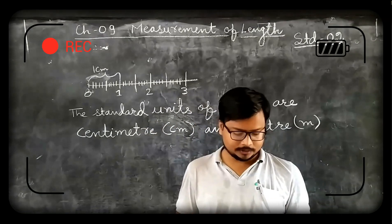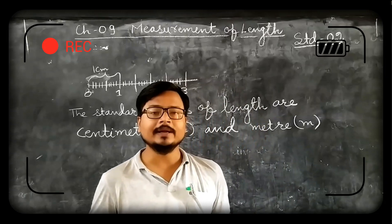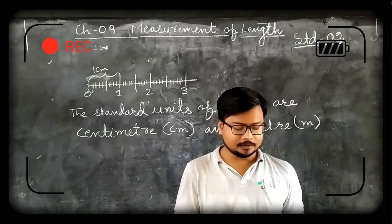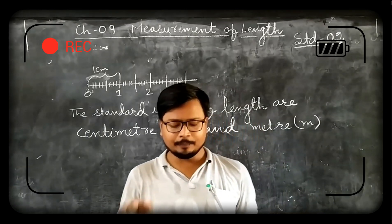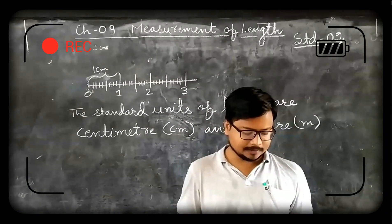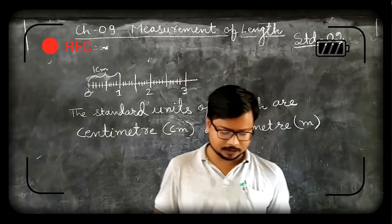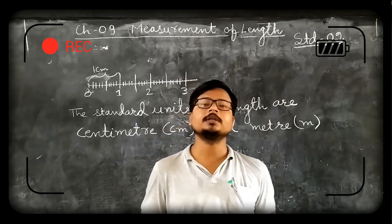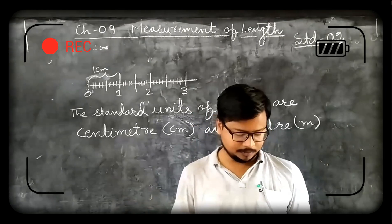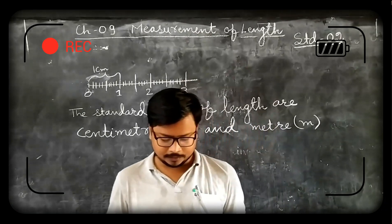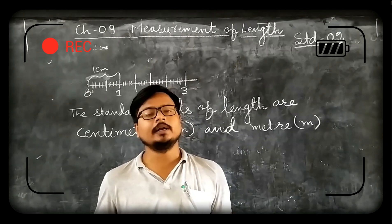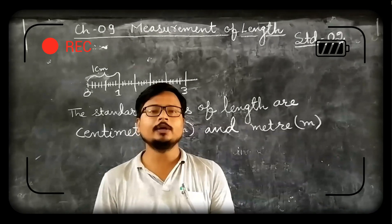These are also called the non-standard units of measuring length: handspan, cubit, foot length, width, finger length and pace. As the fingers, hands, feet and arm length differ from person to person, for accurate measurement of length we use standard units of length. Let us study what are standard units of length. Open page number 124.